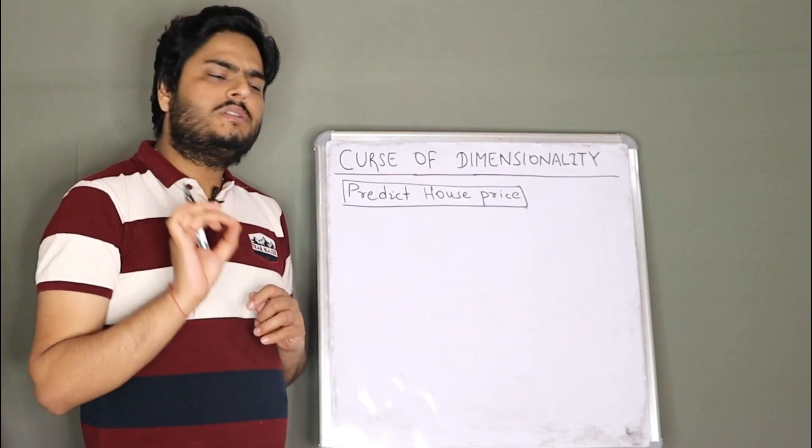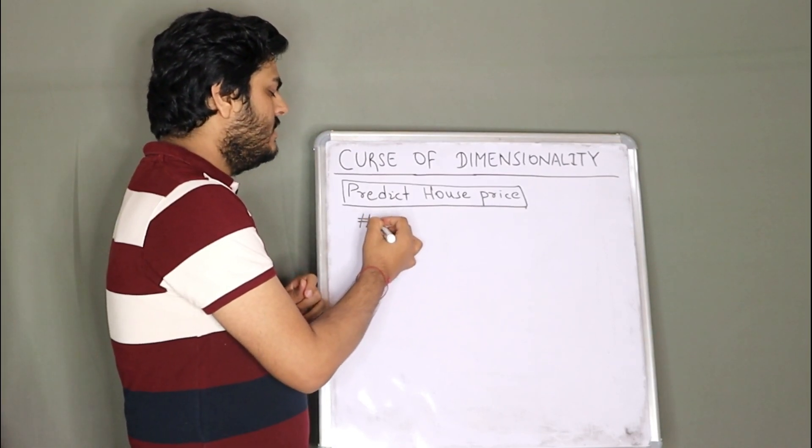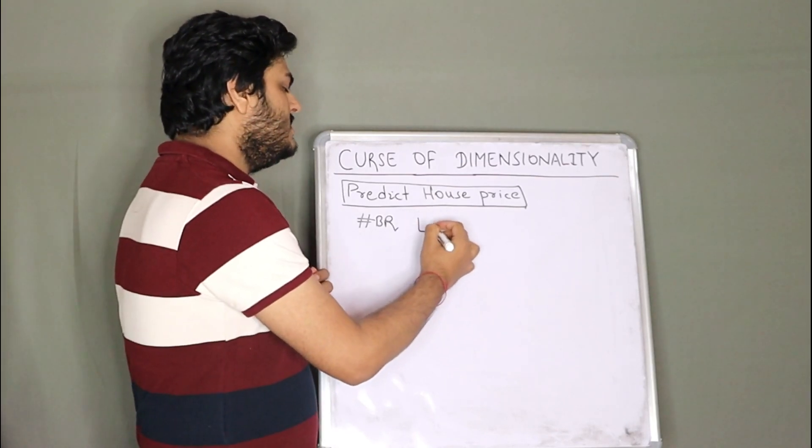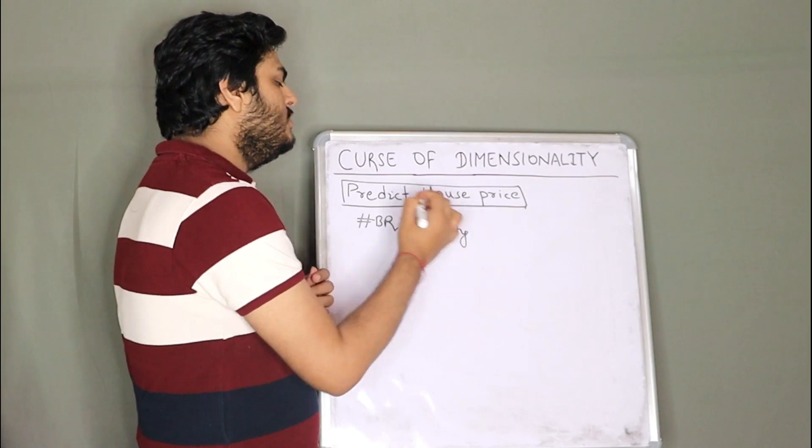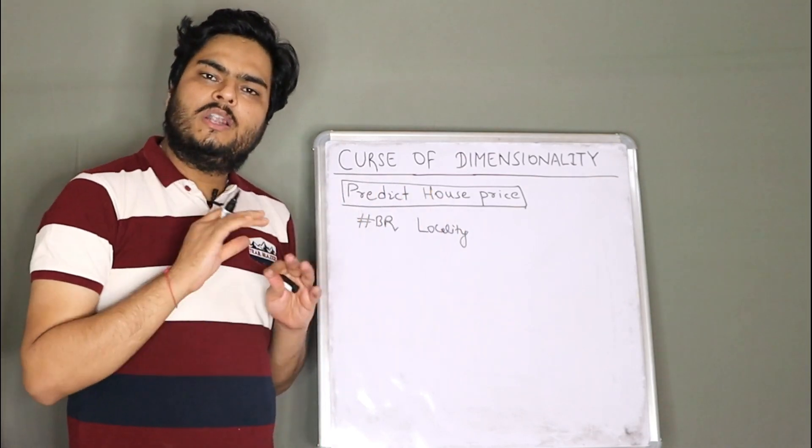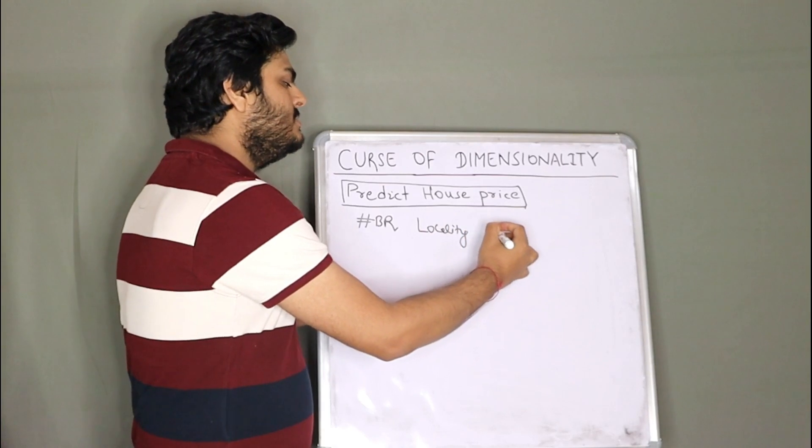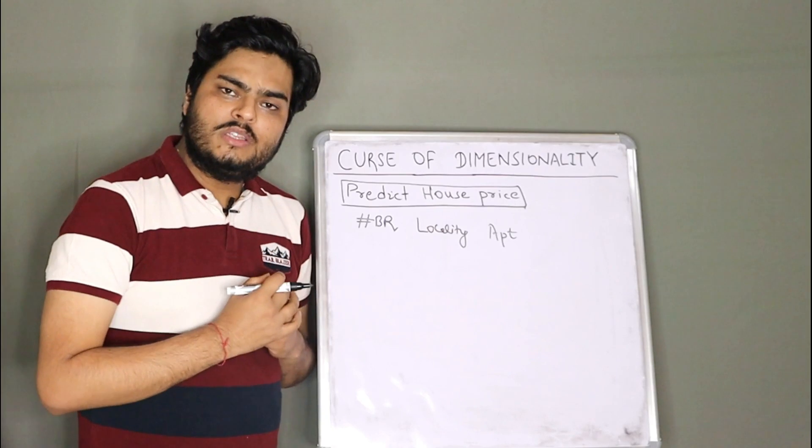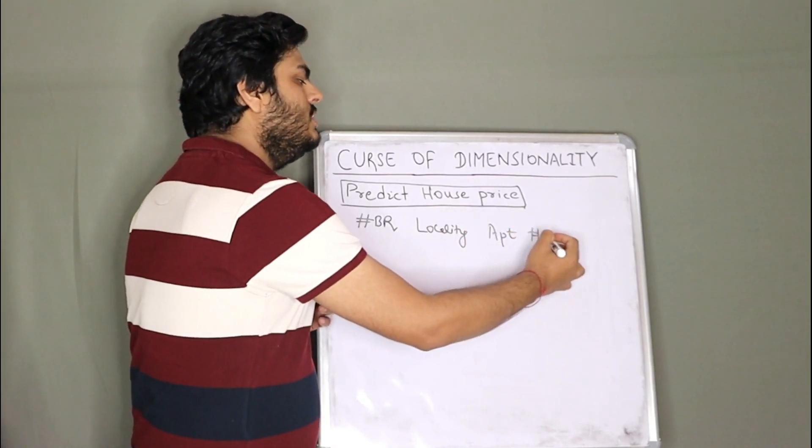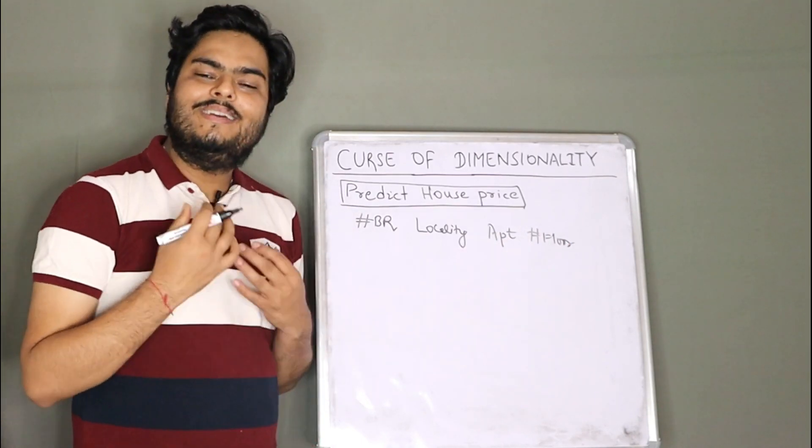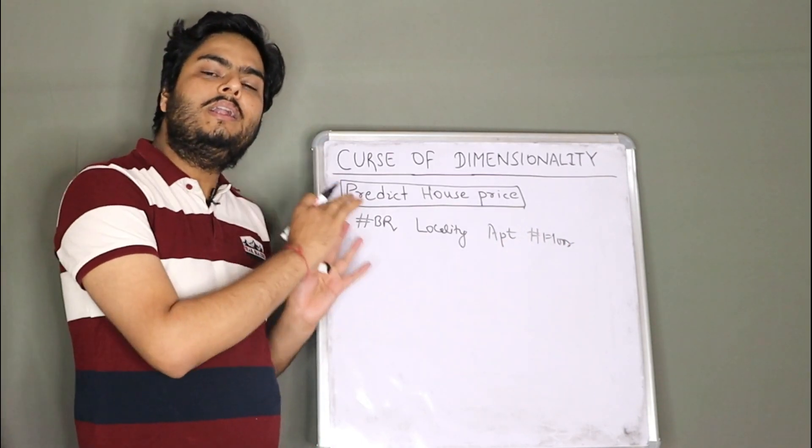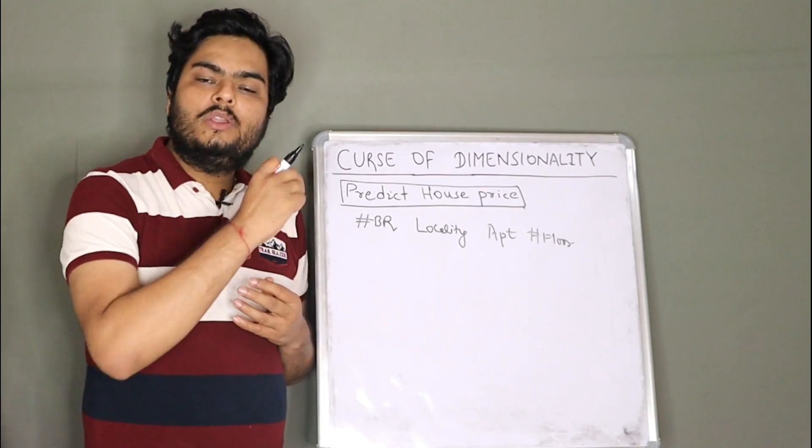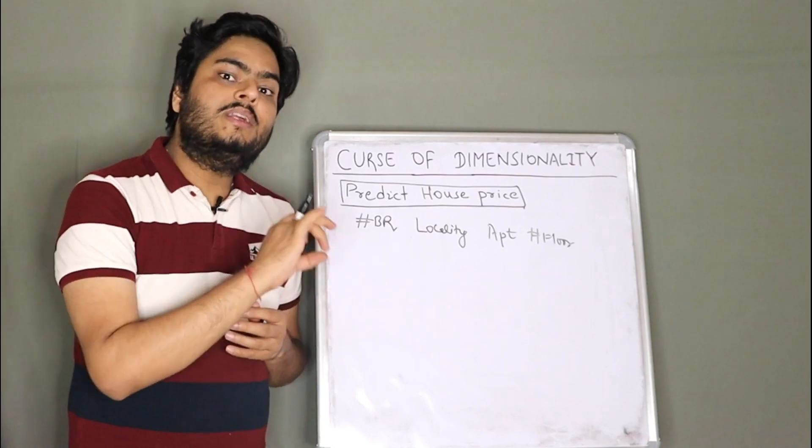So maybe few features you will take as number of bedrooms, in the house. Maybe you will ask me what is the locality. Maybe you will ask me whether it is an apartment or individual house. Maybe you will ask me on which floor the house is. Let's say number of floor. So you will ask me this information, which you feel is relevant for the learning, which you feel is relevant for the model to generalize a phenomena.